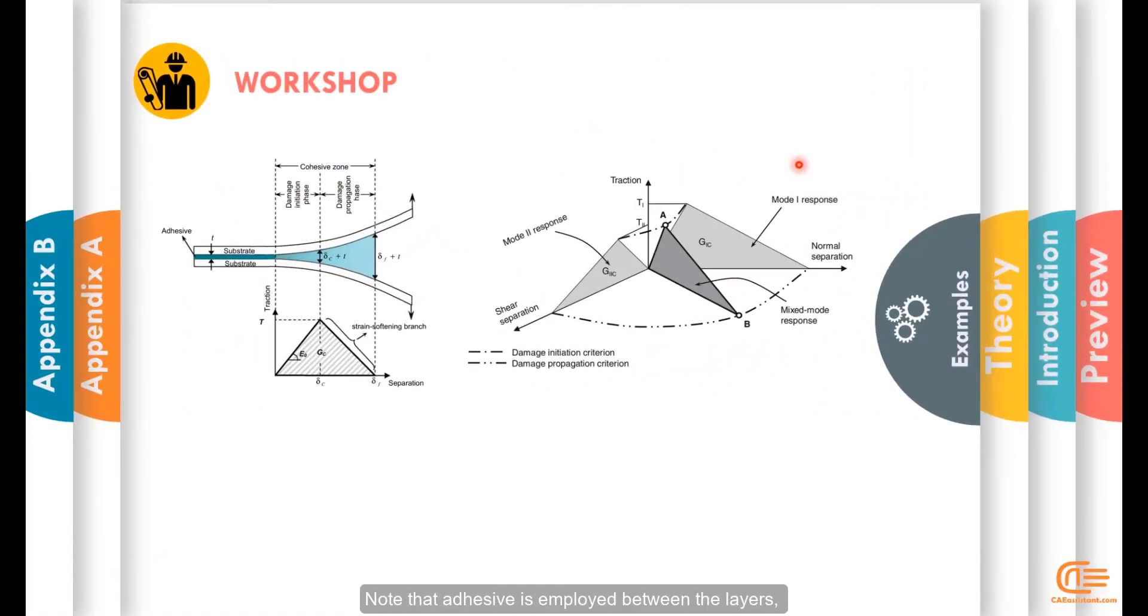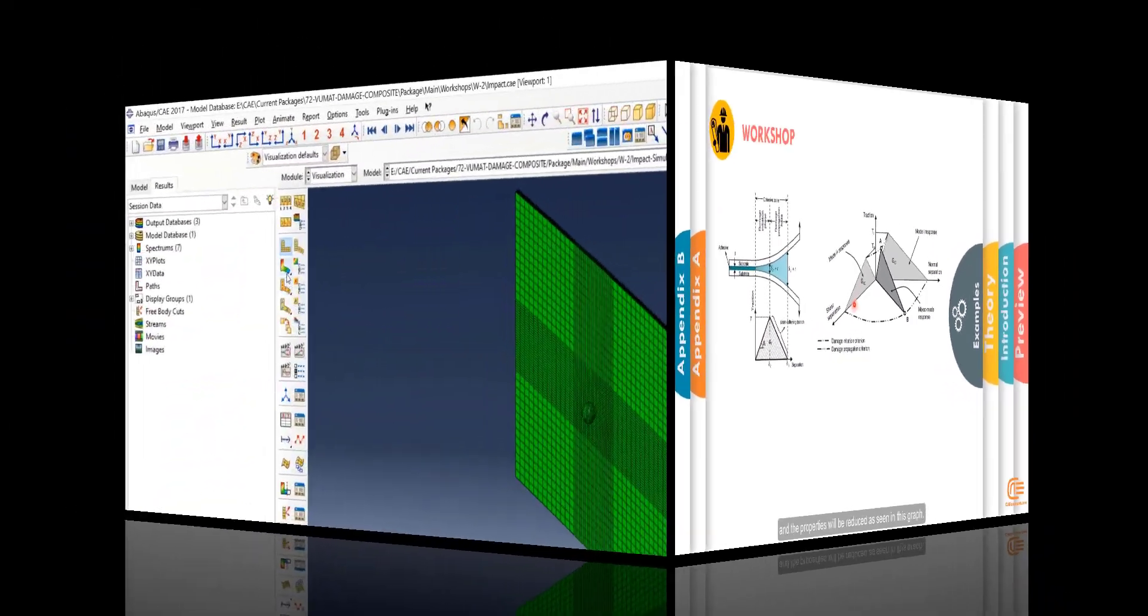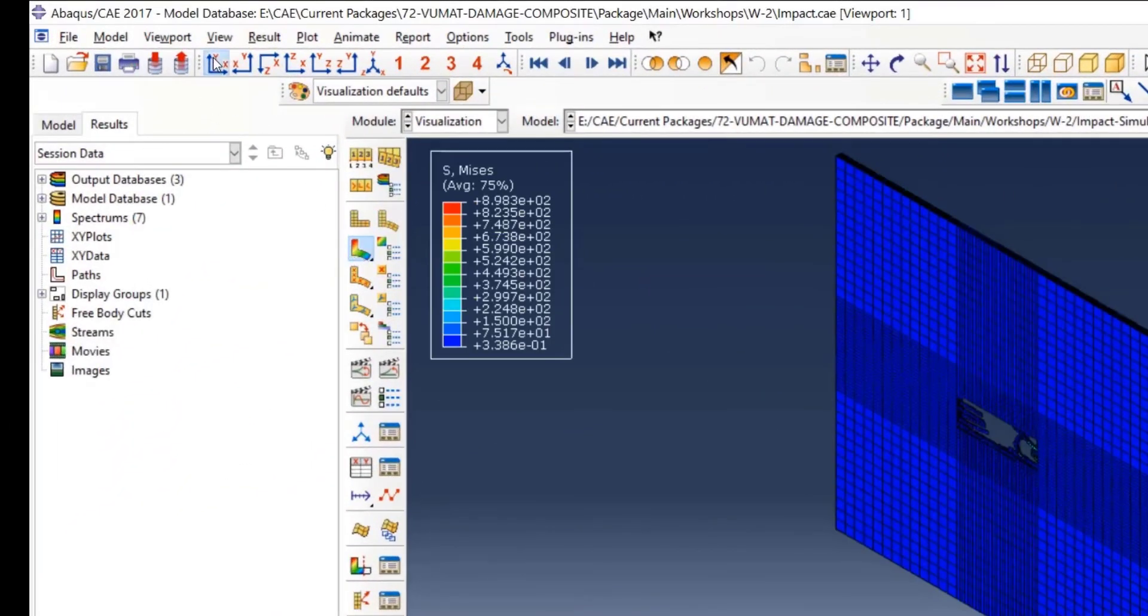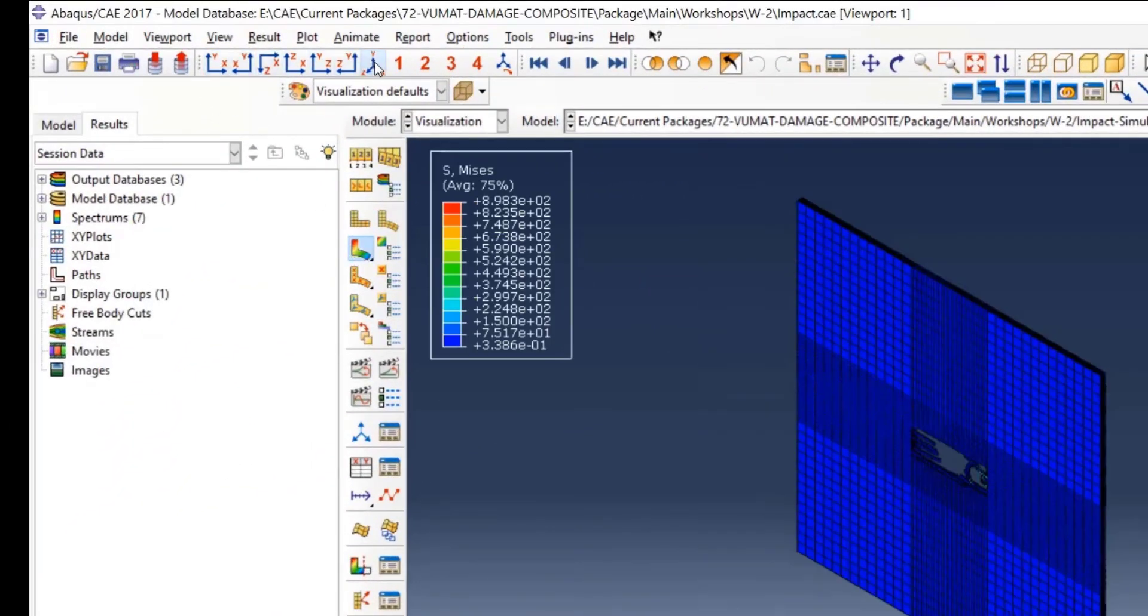Note that the adhesive is employed between the layers and adhesive behavior is linear in elastic phase and also linear in softening phase. You can see the movement of the bullet and the rupture in the result section after the problem is solved.